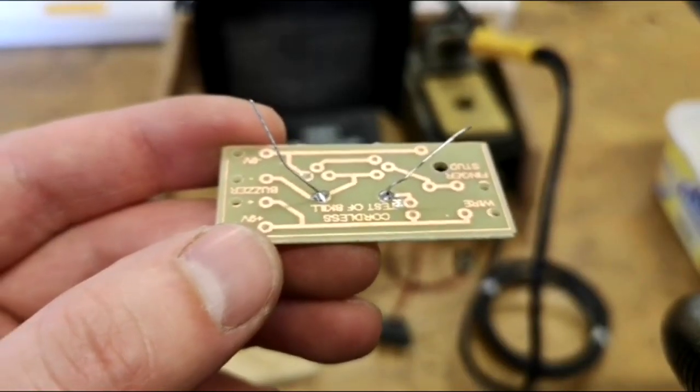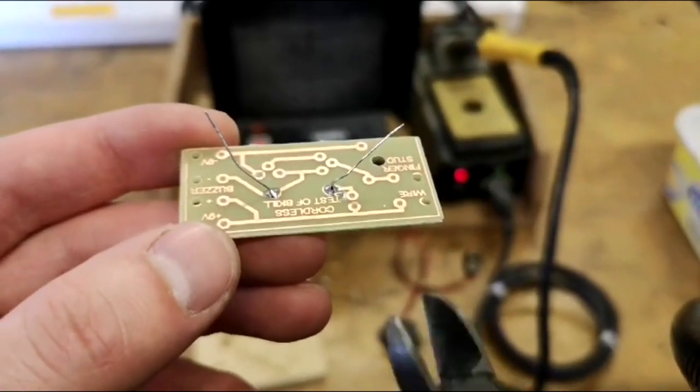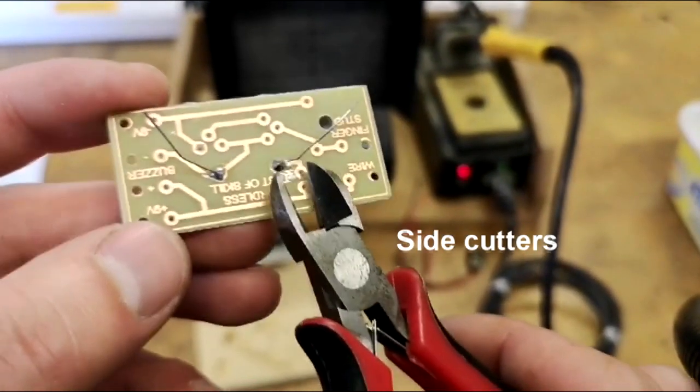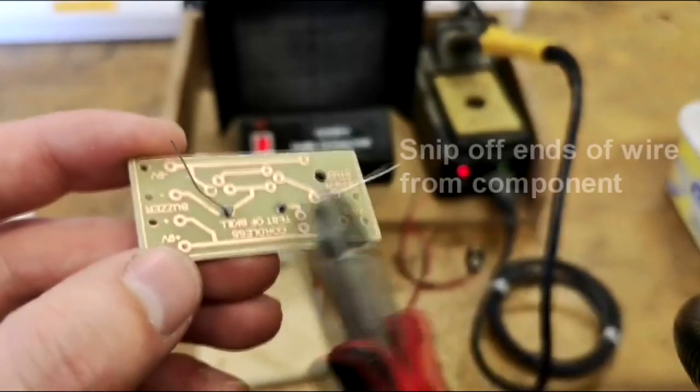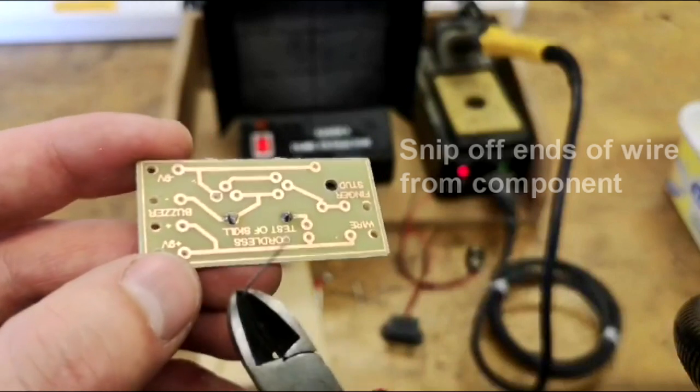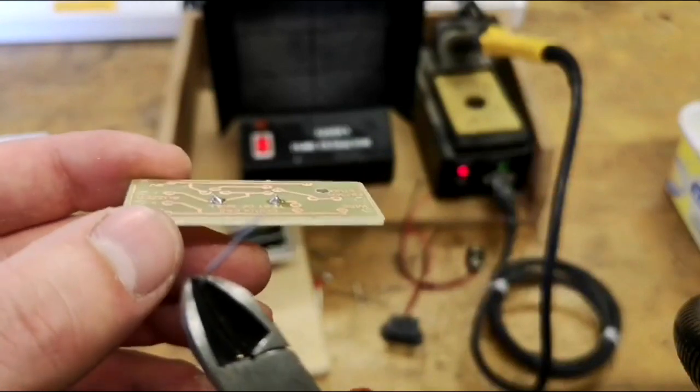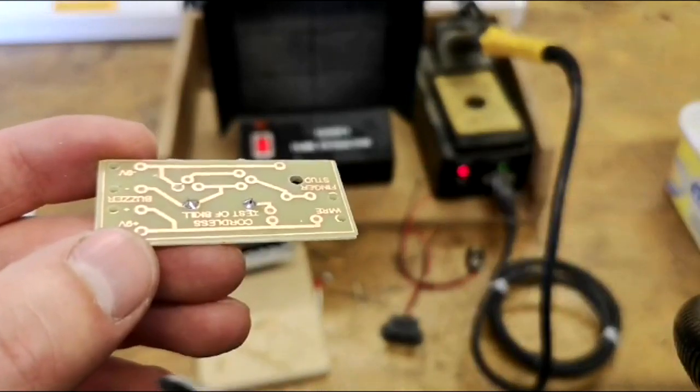After you've soldered the legs of your components, you'll need to use a pair of side cutters to just go in to the top of the solder joint, squeeze, and remove each leg. Be careful—sometimes these legs do ping up in your face, so make sure you're wearing goggles at this point.